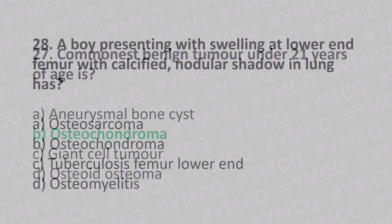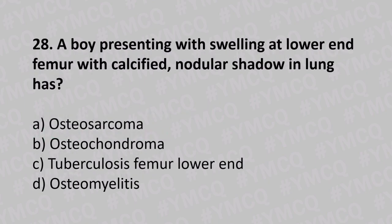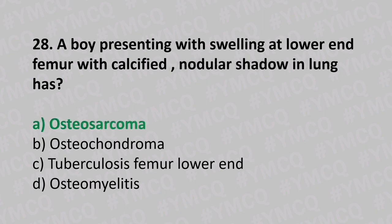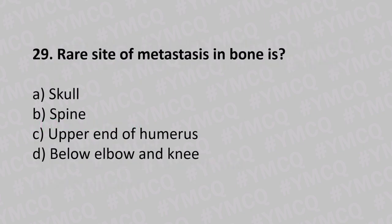Question number twenty-eight: a boy presenting with swelling at the lower end of the femur with calcified nodular shadows in the lungs has option A osteosarcoma, option B osteochondroma, option C tuberculosis of the femur lower end, option D osteomyelitis. The answer is option A, osteosarcoma.